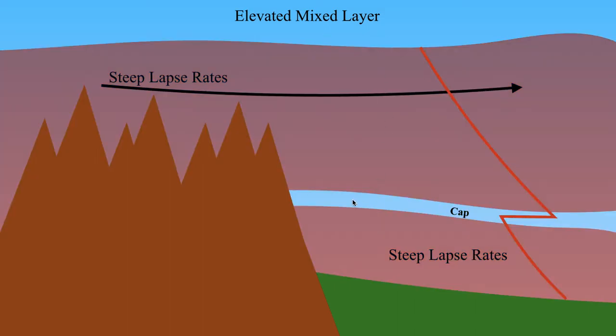If you look at a sounding, ideally, when you see something like this, this is what it's going to look like on a sounding. Temperature decreases very rapidly, a sudden increase in temperature, which again is what we refer to as a cap, which is a layer of warm air that sits above the ground. Then the temperature decreases very rapidly above the cap.